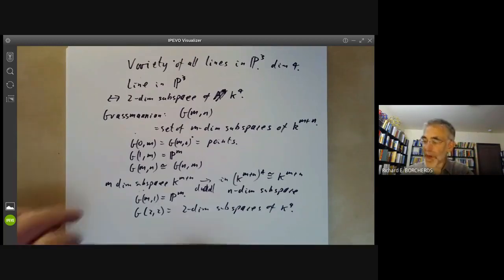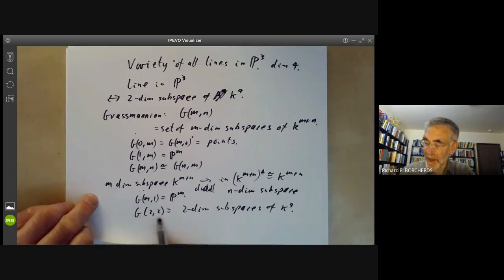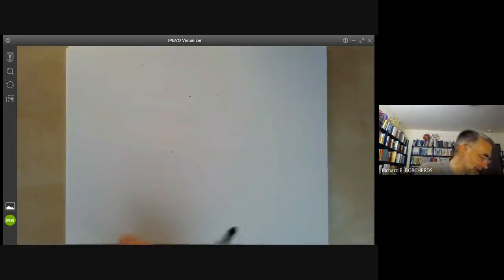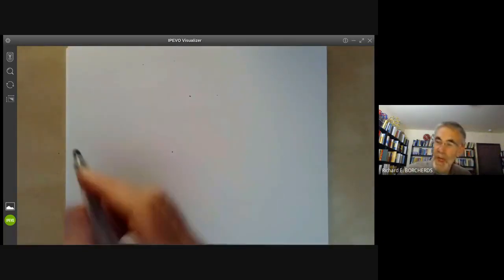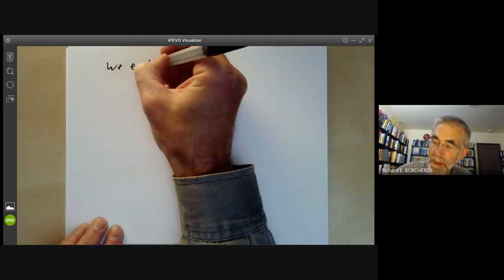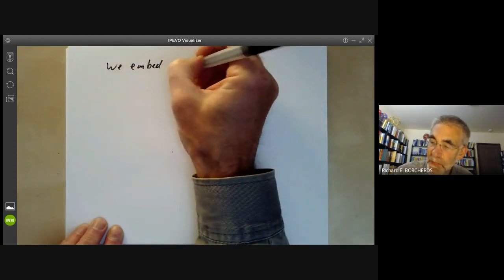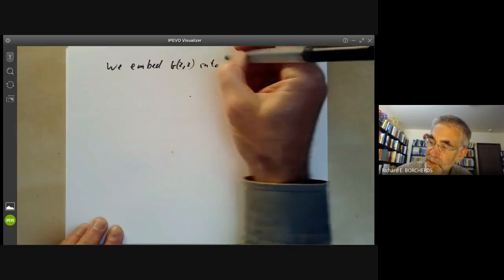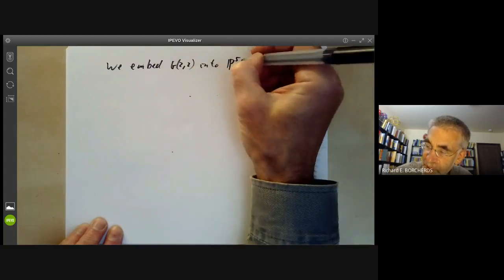So what we want to do is to try and make this Grassmannian G2,2 into a projective variety. We will do that. We will embed G2,2 into five-dimensional projective space.